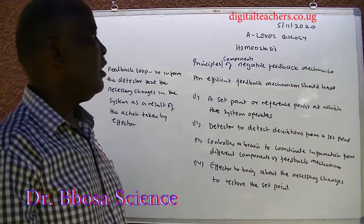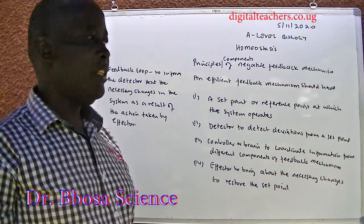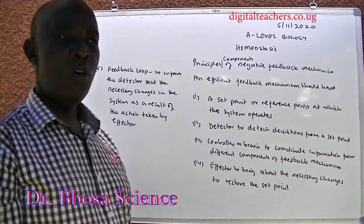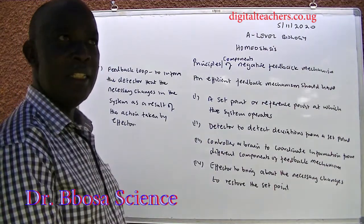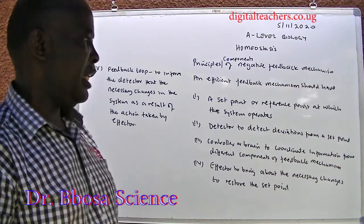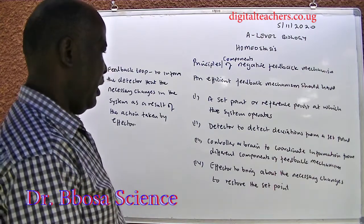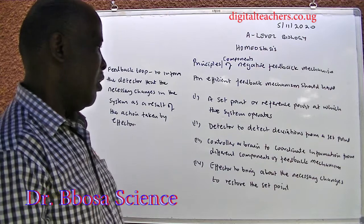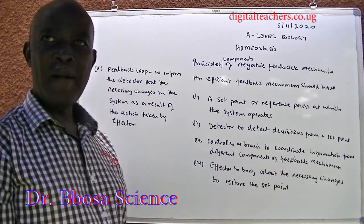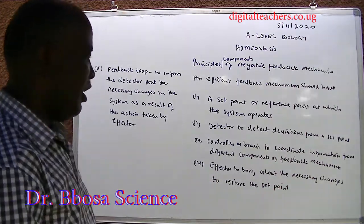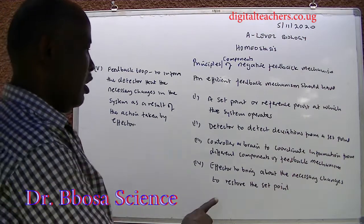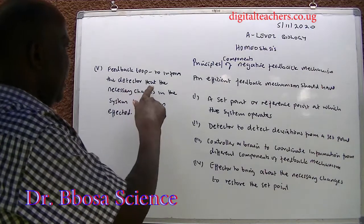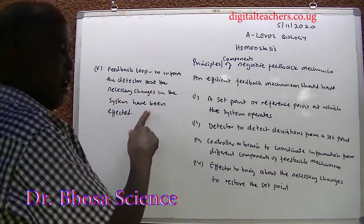Principles or components of negative feedback mechanism. An efficient feedback mechanism should have: one, a set point or reference point at which the system operates; two, a detector to detect deviations from the set point; three, a controller or brain to coordinate information from different components of the feedback mechanism; four, the effector to bring about the necessary changes to restore the set point; five, a feedback loop to inform the detector that the necessary changes in the system have been effected.